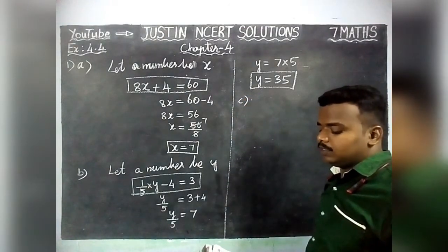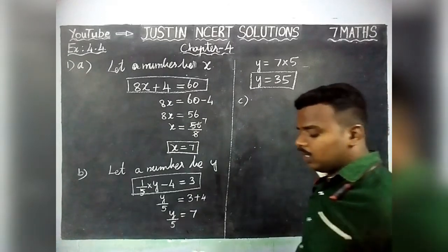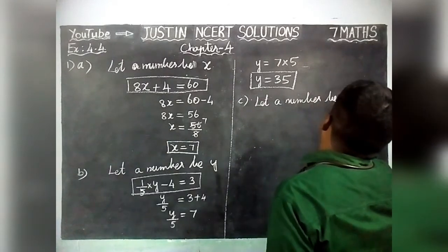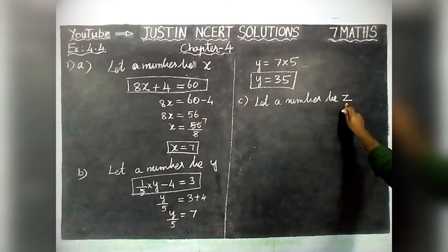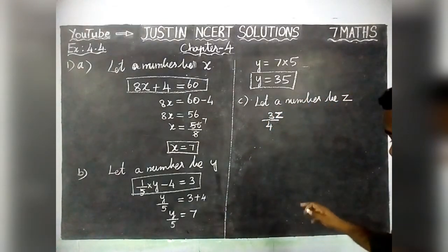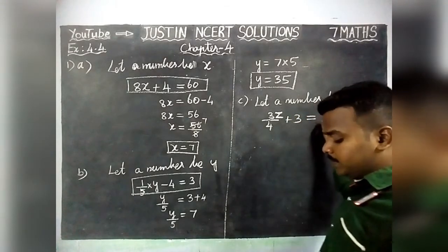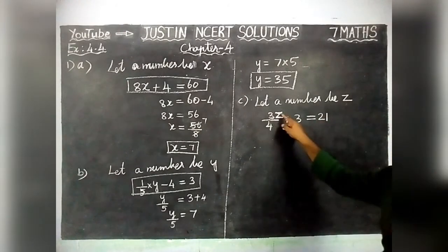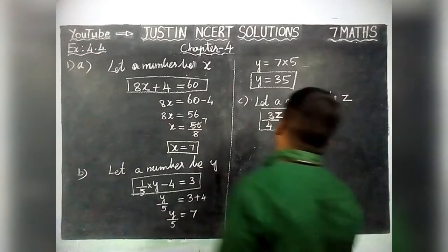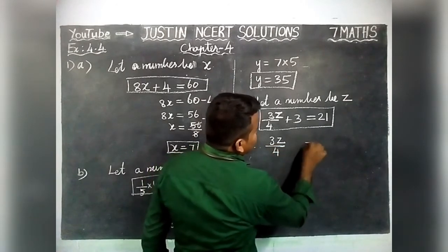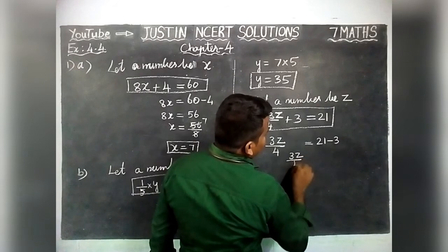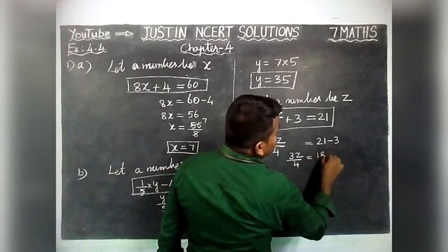Part C: If I take 3/4ths of a number and add 3 to it, I get 21. Let the unknown number be Z. 3/4ths of a number can be written as 3Z divided by 4. So the required equation is: 3Z/4 + 3 = 21. Taking +3 to the right hand side it becomes minus 3, so 3Z/4 = 21 - 3 = 18.